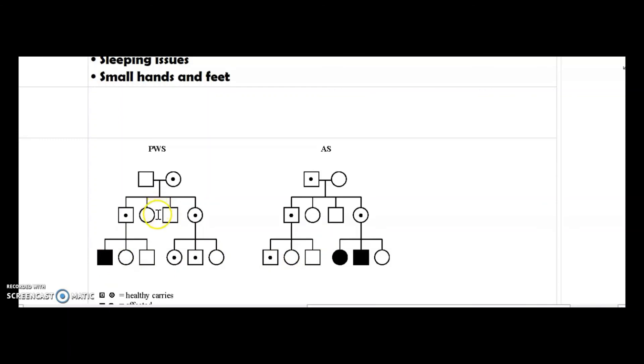For Prader-Willi syndrome, we have a paternal deletion, unlike Angelman syndrome where we have the maternal deletion. That's why we see the mother is the one that inherits Angelman syndrome. For Prader-Willi syndrome, since we have the paternal deletion, the male inherits it to their offspring.